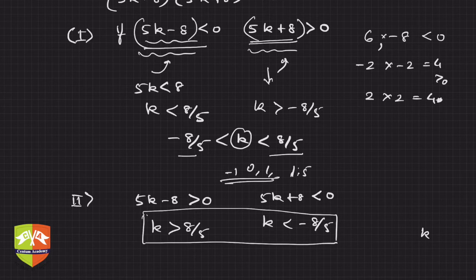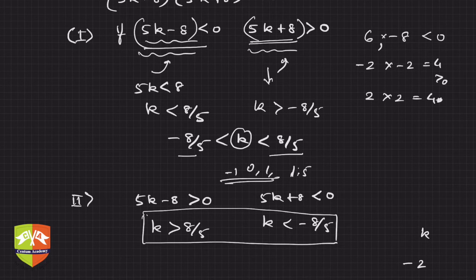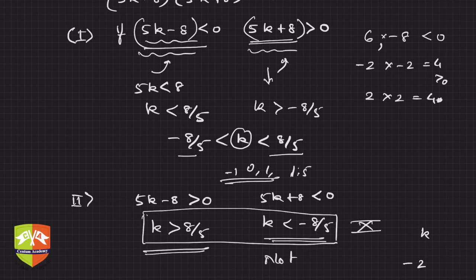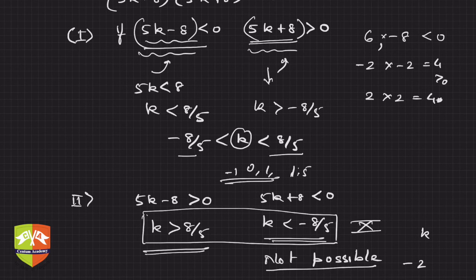Similarly, there is no number that is both greater than 8/5 and less than −8/5. So Case 2 is impossible. Only Case 1 is valid.